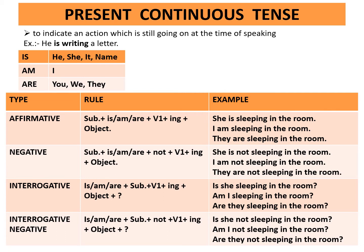Affirmative examples: She is sleeping in the room. I am sleeping in the room. They are sleeping in the room. Negative rule: subject plus is or am or are plus not plus first form of the verb plus ing plus object. Example: She is not sleeping in the room. I am not sleeping in the room. They are not sleeping in the room. Interrogative rule: is or am or are plus subject plus first form of the verb plus ing plus object plus question mark. Example: Is she sleeping in the room? Am I sleeping in the room? Are they sleeping in the room?